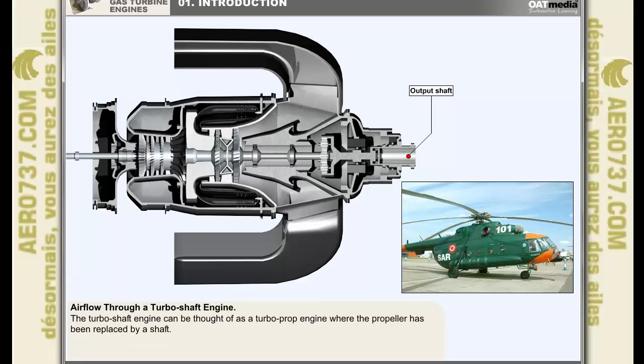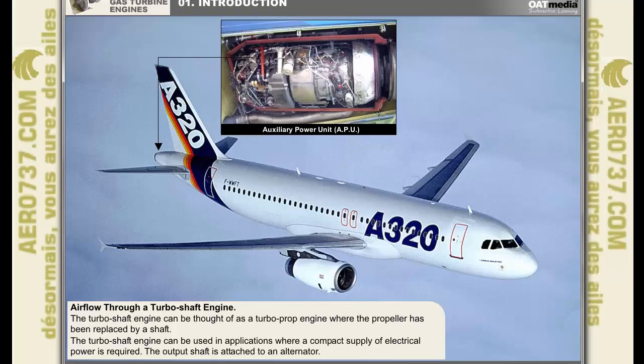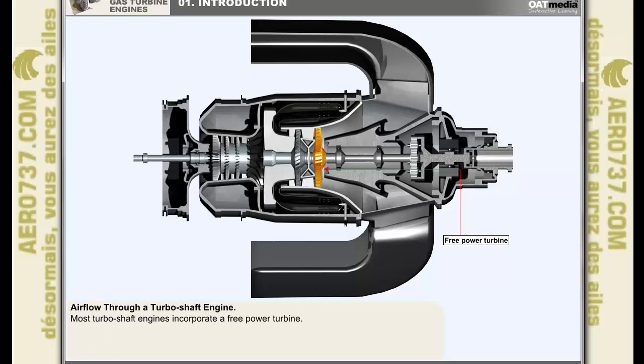The turboshaft engine can be thought of as a turboprop engine where the propeller has been replaced by a shaft. Turboshaft engines can be used to drive helicopter rotors. They can also be used in applications where a compact supply of electrical power is required, their output shaft being attached to an alternator. This is the type of engine normally used as the auxiliary power unit or APU on most modern transport aircraft. Most, if not all, turboshaft engines incorporate a free power turbine. A free power turbine is a turbine that is not connected to any of the compressors. This frees the turbine from the constraint of having to rotate at a speed that suits the compressor, and this gives the turbine a much wider operating speed range.